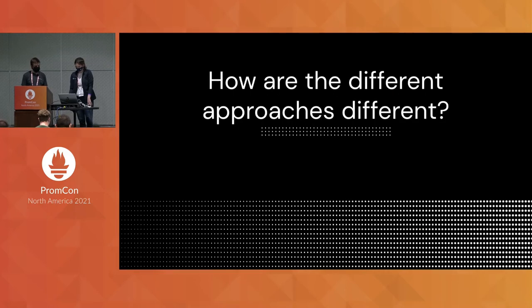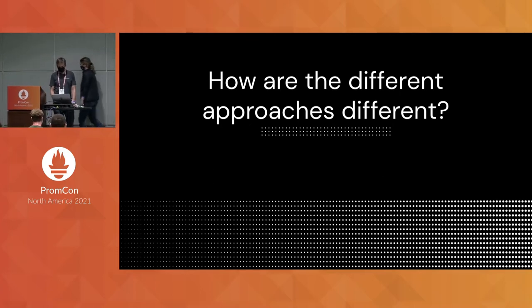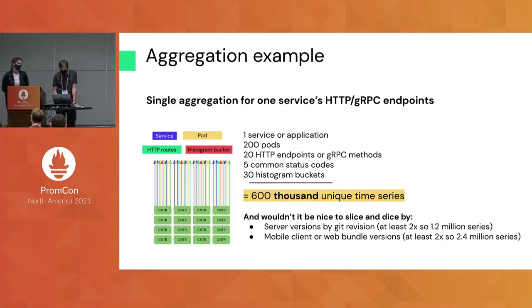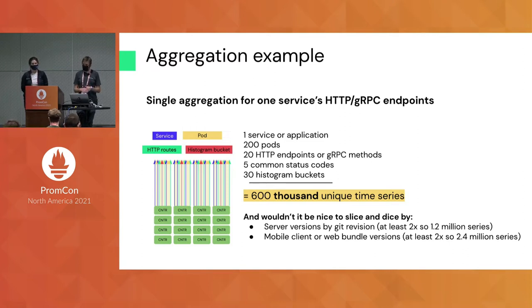Now Rob is going to go through how these two different approaches — streaming aggregation with M3 and regular recording rules — differ from each other. What's worth talking about first is a high-cardinality use case example. Histograms tend to be an obvious choice here because the number of buckets you define, which gives you the level of granularity for precision in histogram measurements, can multiply your cardinality quite extensively.